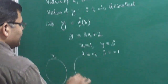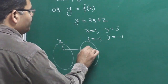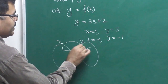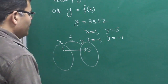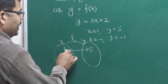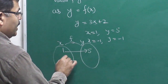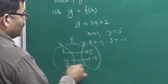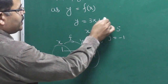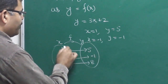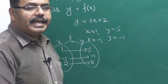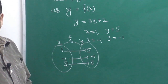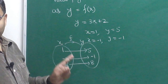Diagrammatically, we can represent this: if x is this set and y is that set, for x equal to 1 there is value 5 — so 5 is called the image. For x equal to minus 1, y is minus 1. For x equal to 2, y equals 3 times 2 plus 2, which is 8. For every value of x there is a unique value of y, then we say function is defined — and that function is called y is a function of x.